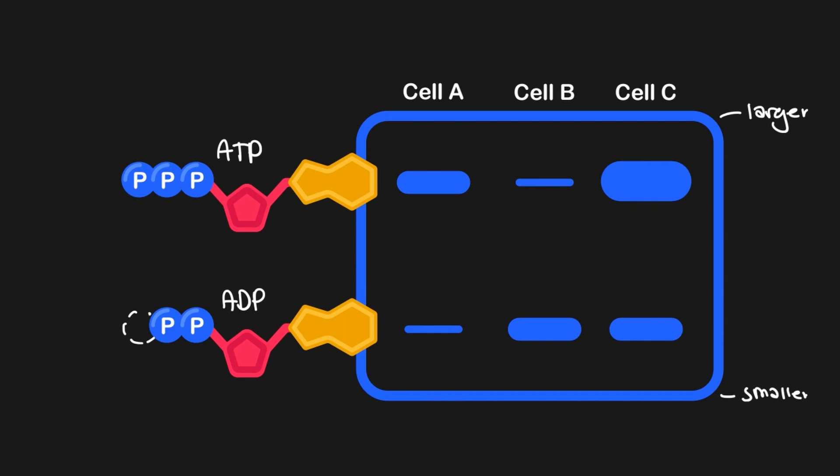Additionally, the thickness of the bands can also differ from one another, where thicker bands represent more of whatever molecule is being identified. For example, cell C contains the largest amount of ATP in its cytosol out of all of the cells, since it has the thickest band in the ATP marker. While cell A contains more ATP than ADP, which is in contrast to cell B, which has more cytosolic ADP compared to ATP.